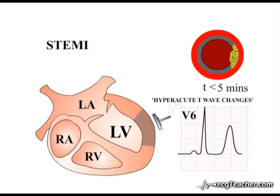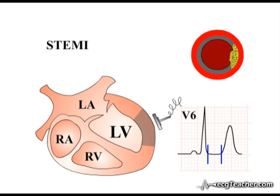In these early stages, hyperacute T wave changes are followed by a very characteristic ECG abnormality in the affected leads. The line on an ECG readout connecting the end of the QRS complex and the T wave is called the ST segment.